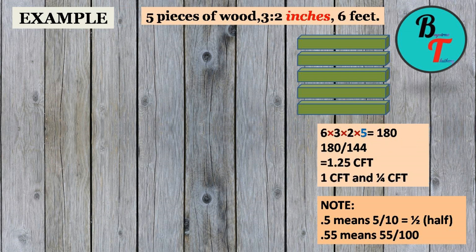Our next example is if you have 5 pieces of wood of length 6 feet each and breadth and height in the ratio 3 is to 2. We need to calculate this in CFT. Let us calculate as our discussed two processes.